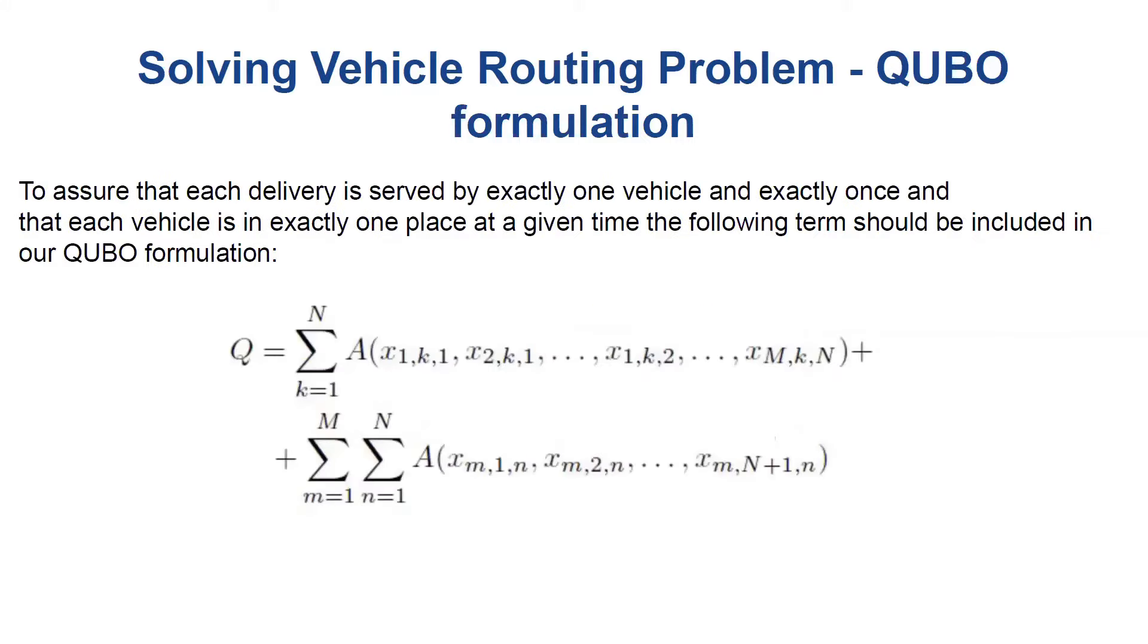Now, to assure that each delivery is served by exactly one vehicle and exactly once, and that each vehicle is in exactly one place at a given time, the following term Q should be included in our QUBO formulation. The first component of Q is equal to zero if and only if each delivery is served by exactly one vehicle and exactly once. The second term is equal to zero if each vehicle is in exactly one place at a given time.